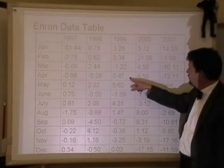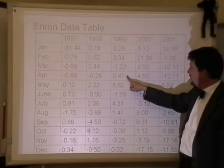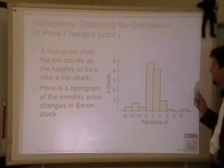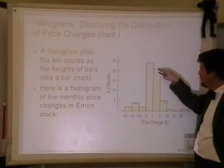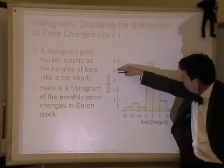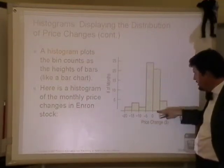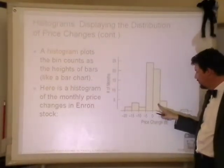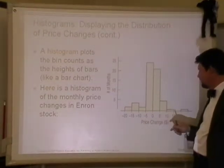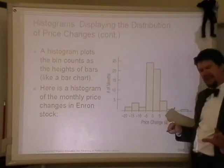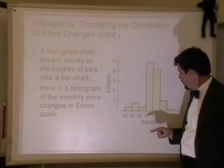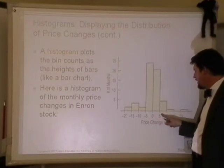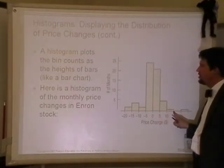Looking at April 1999, it's a $0.47 increase. As a $0.47 increase, that means it is going to be one of the 21 values in this bar right here. The value of $4.50 would be in another bar, and that value of negative $1.25 would be between negative 5 and 0. So why is it that the bars have to touch here?